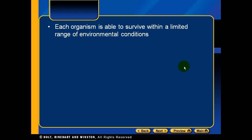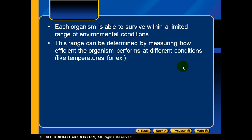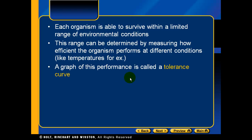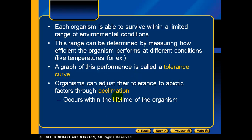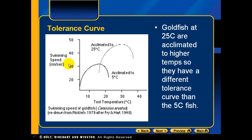Each organism is able to survive within a limited range of environmental conditions. This range can be determined by measuring how efficiently the organism performs at different conditions, like temperature. At a certain temperature, that organism could be at its peak performance, and at other temperatures it might be slow and sluggish. A graph of this type of performance is called a tolerance curve. Organisms can adjust their tolerance to abiotic factors through acclimation, within the lifetime of the organism.